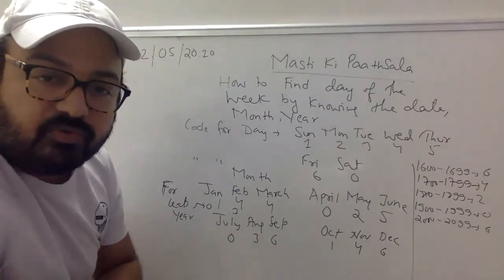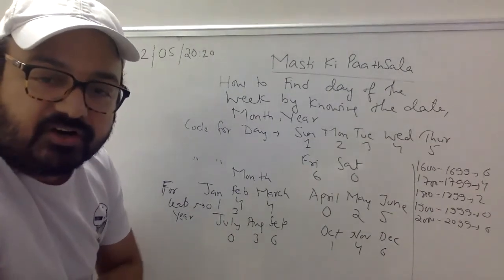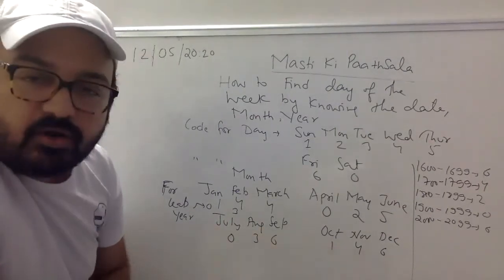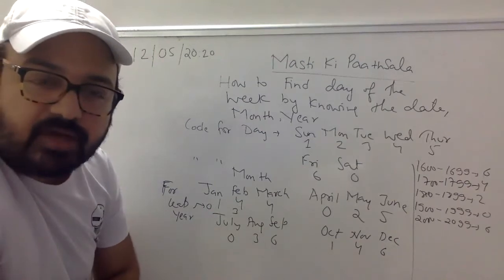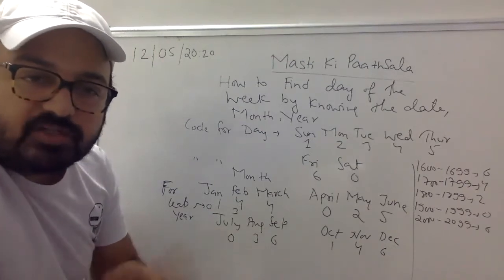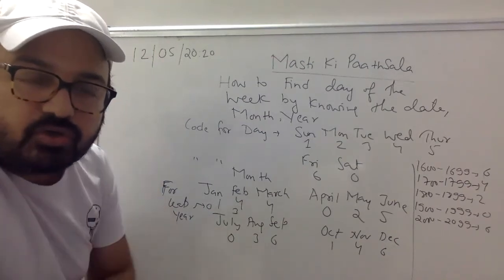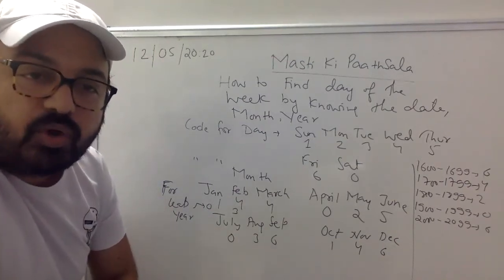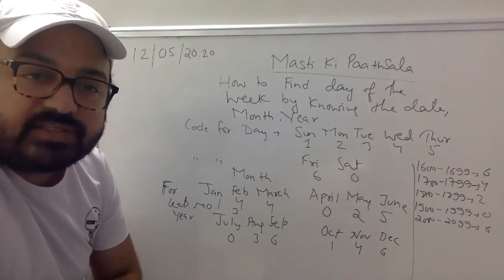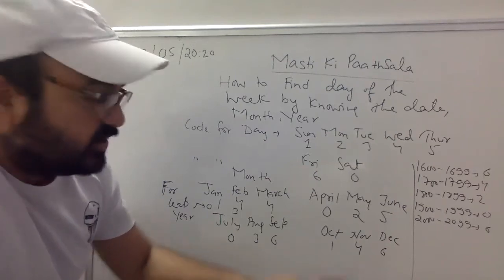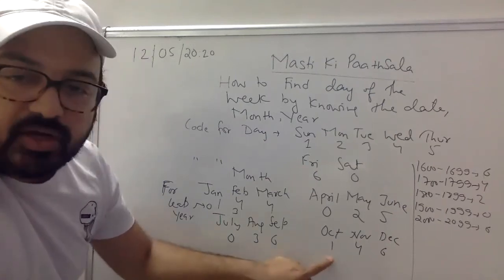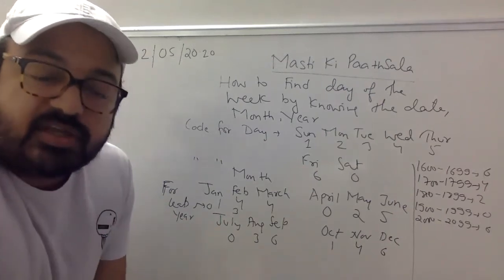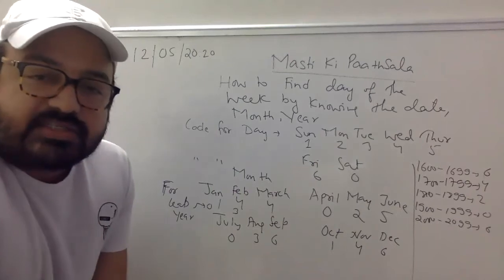October, November, December के लिए: 12 के square में 2 जोड़ दो — 144+2 = 146. तो October को 1, November को 4, और December को 6.